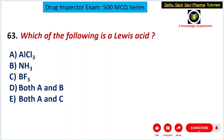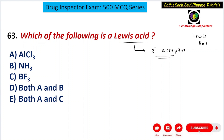Third question: which of the following is a Lewis acid? A) Aluminium chloride, B) Ammonia, C) Boron trifluoride, D) Both A and B, E) Both A and C. Lewis acid is an electron acceptor — species that can accept electrons are called Lewis acids. Lewis bases are electron donors.